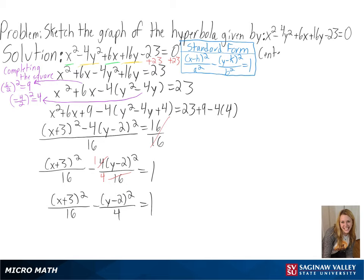To start plotting our graph, we need to find the center of the hyperbola. We can see that h = -3 and k = 2, so our center will be (-3, 2).